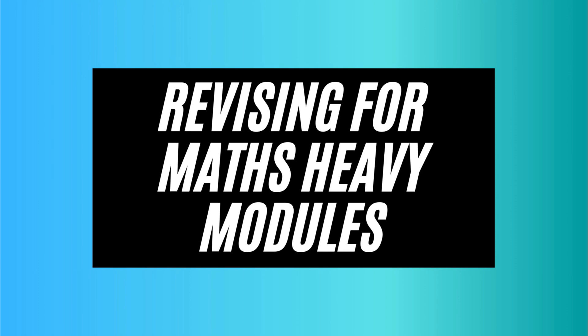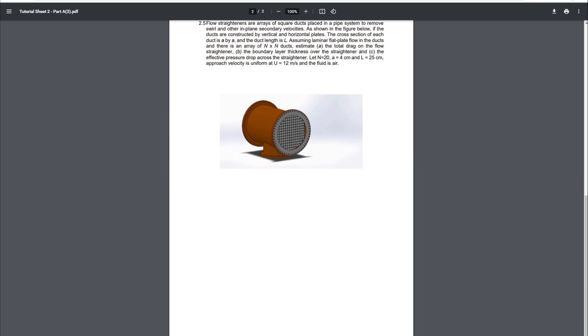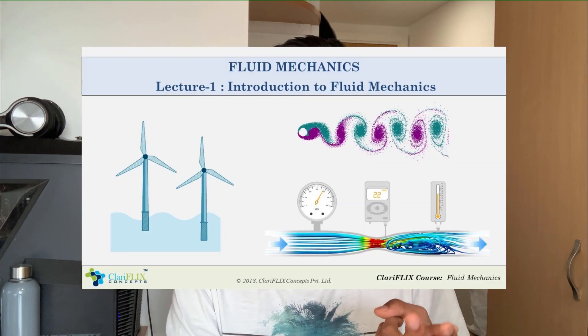So for my favorite type of modules, which are the maths heavy modules — maths heavy modules are quite simple to revise for. You just tend to do a lot of your tutorial practice questions, which are generally sheets that you get over the course of the semester or year, depending on how long the module is. They contain questions and problems to solve regarding whatever you're learning about — it could be fluid mechanics, dynamics, whatever really. So that's one of my tips for how to revise for your really maths heavy modules.